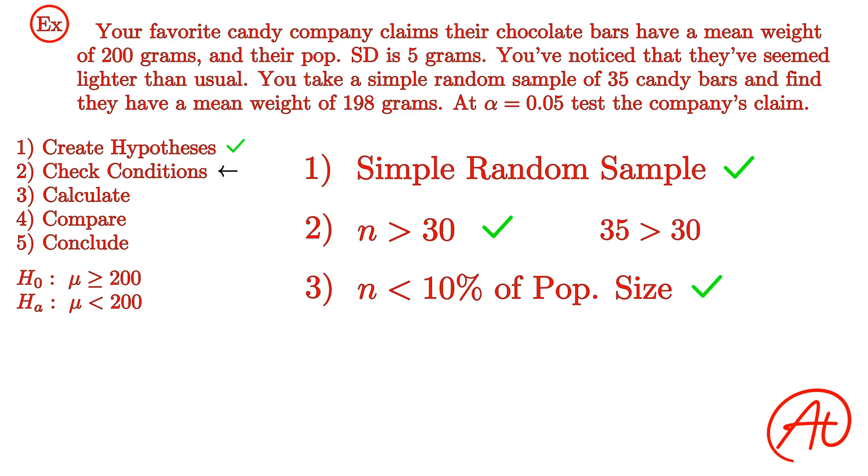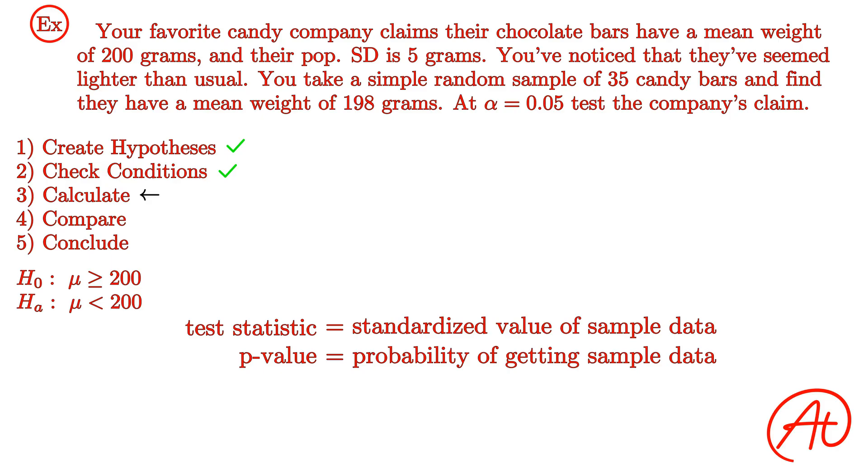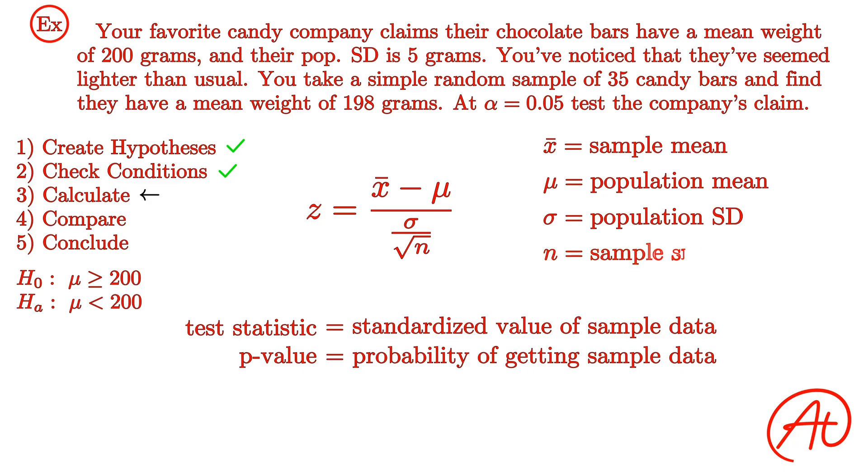Okay, now that our conditions are met, we can move on with the problem and calculate the test statistic and p-value for our sample. As a reminder, the test statistic is just the standardized value associated with our sample data, in our case the sample mean. And the p-value represents the probability of getting the sample mean we got if the true population mean is indeed 200 grams. Since this is a one-sample z-test, and we're using a normal distribution, our test statistic is a z-statistic. The formula for z for one-sample z-test for means is z equals x-bar minus mu divided by sigma divided by the square root of n, where x-bar is our sample mean, mu is our assumed population mean, sigma is our population standard deviation, and n is our sample size.